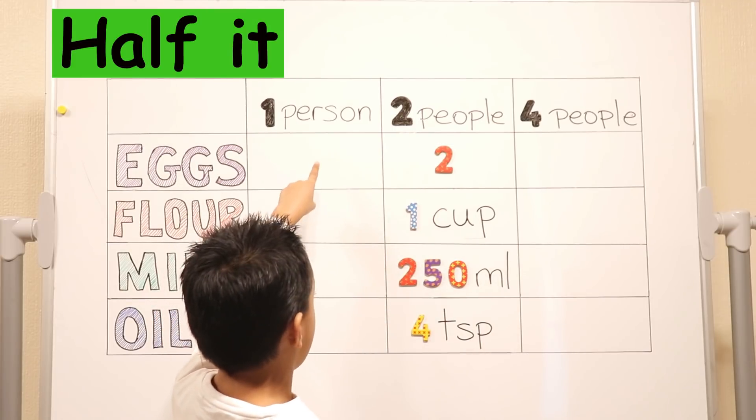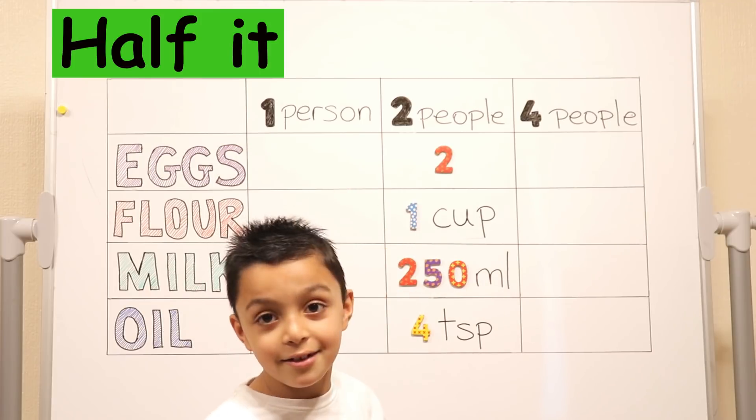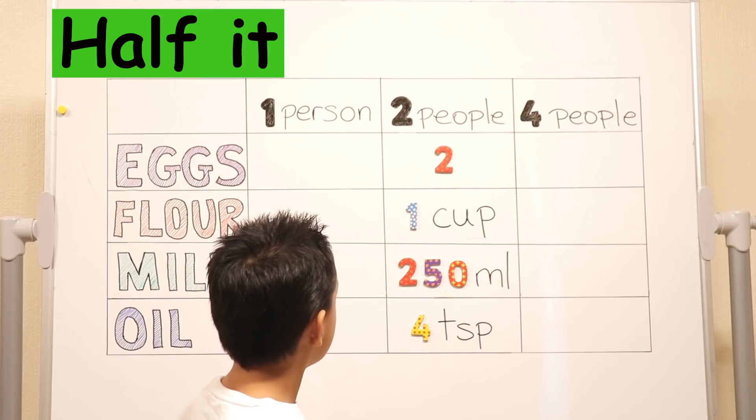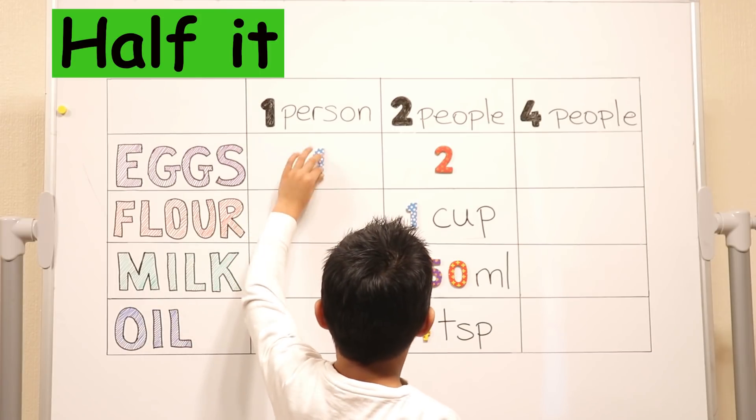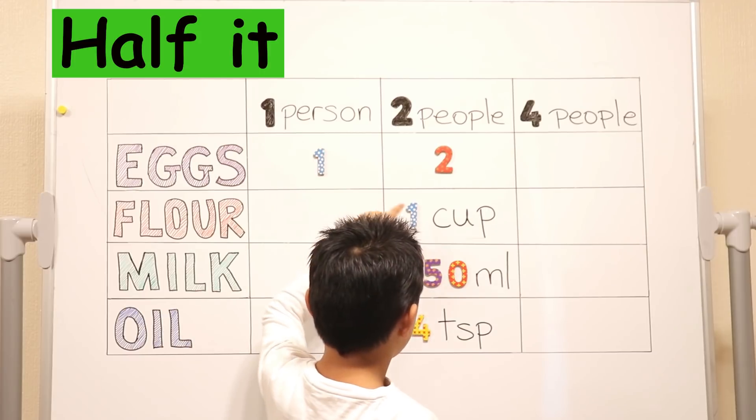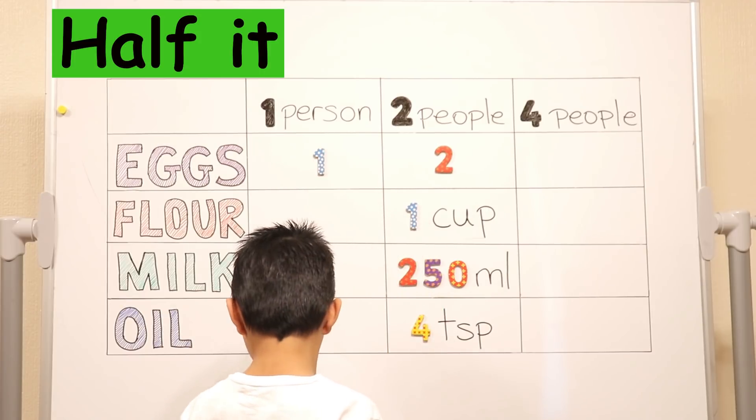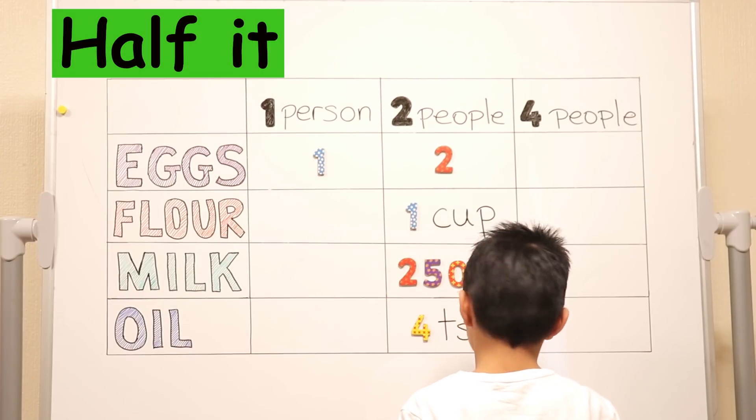Very good. For one egg. Okay. So one at a time. So one egg. So can you find the numbers and fill it in? One egg. Okay. And then half a cup.